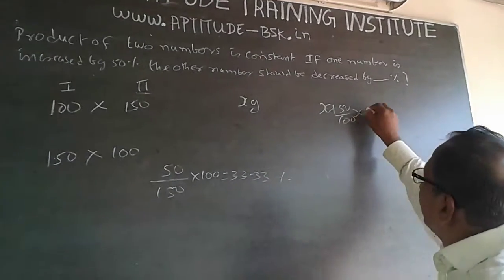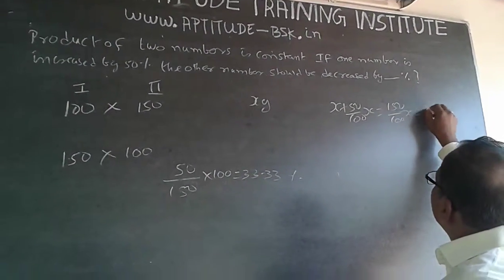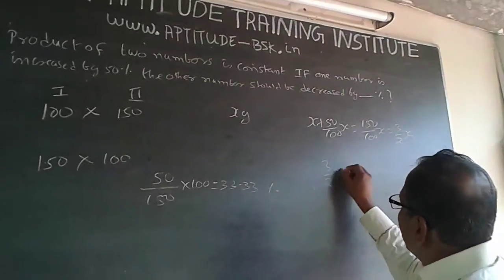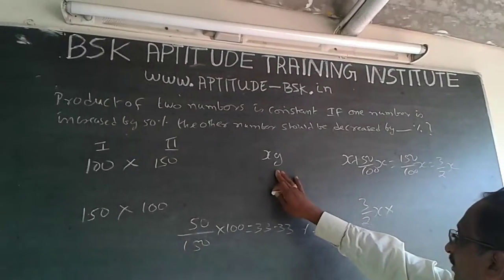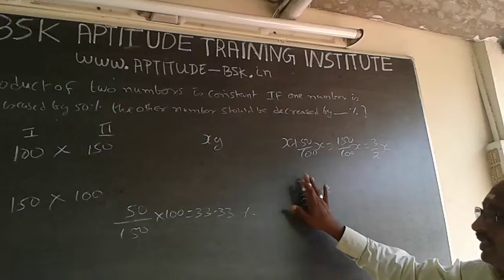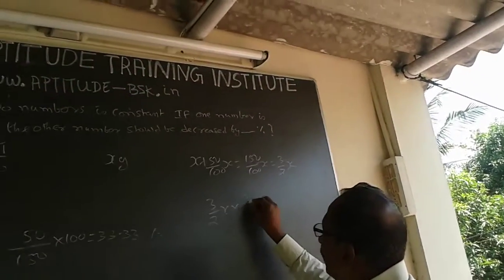This equals 150/100 of x, or 3/2 of x. Now, 3/2 of x times y—to get only xy, this 3/2 has to get canceled, so automatically it has to be 2/3 of y.